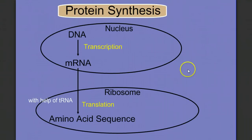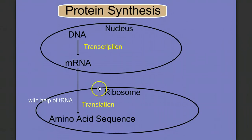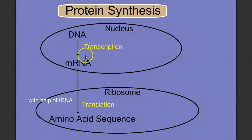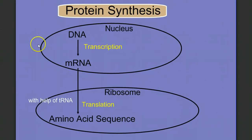So there's our introduction to protein synthesis. DNA is transcribed into messenger RNA inside the nucleus, and then the messenger RNA is translated at the ribosome with the help of transfer RNA into the amino acid sequence. Come back soon for videos on the details of transcription and translation — you'll want to study those videos closely as we need to know step by step how each of these processes work. Make sure you understand this overview video well before you watch those videos. Thank you.